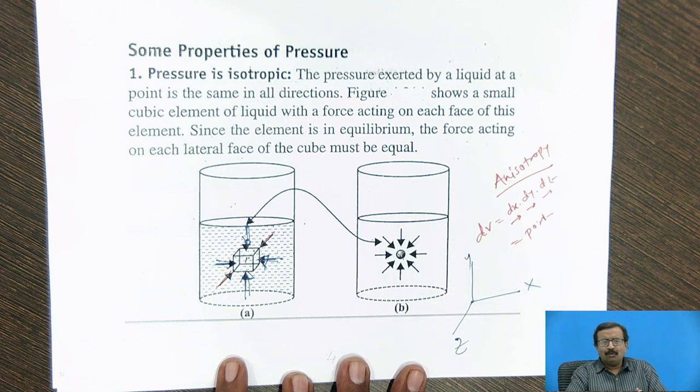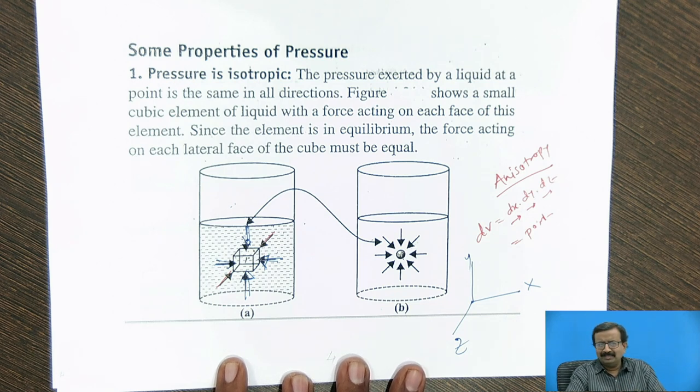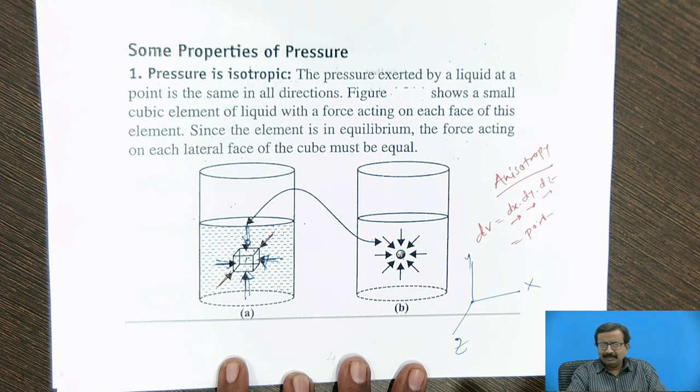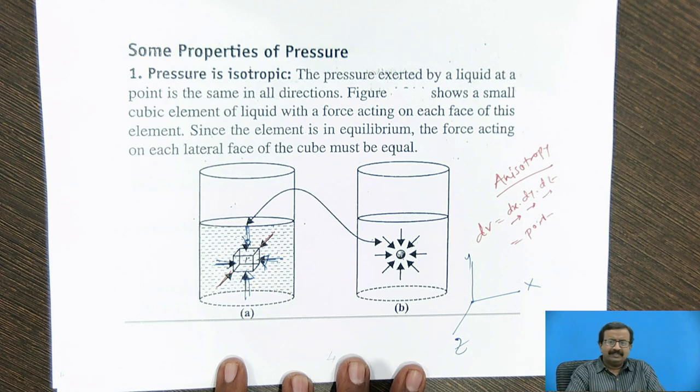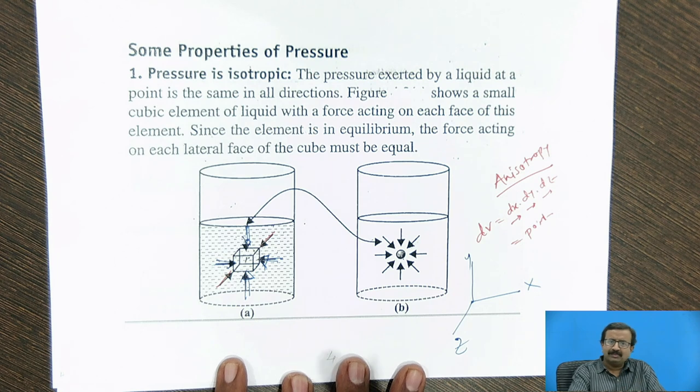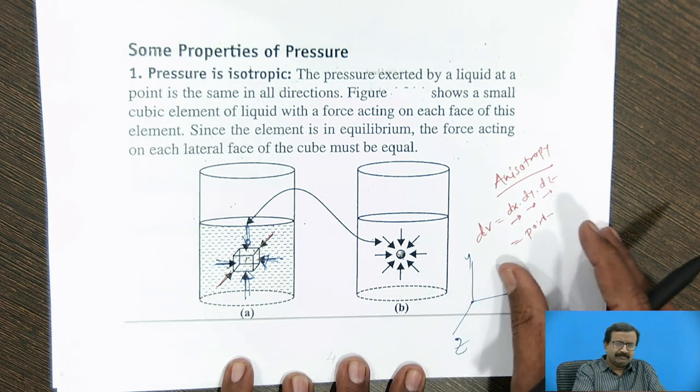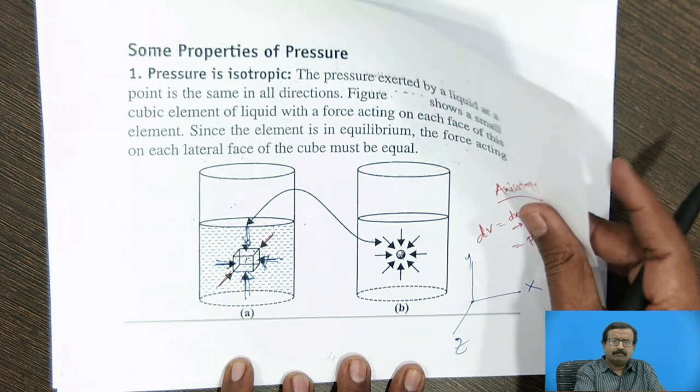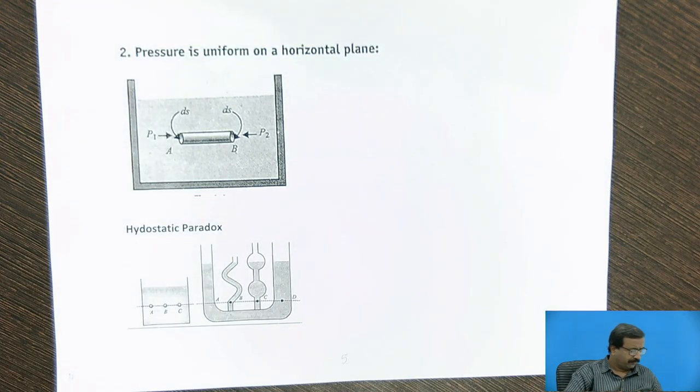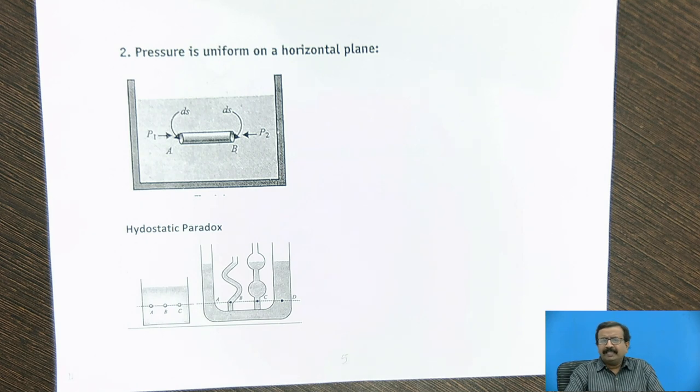And I will show that the pressure is compressive. So the pressure is always compressive. There is no concept of tensile pressure. Tensile stress is there, but pressure is always compressive. And in static pressure, when we show it on the Mohr circle, it will be a point. It will not be a circle because there is no shear. There is no movement of the fluid taking place. So this is the first point. That is, fluid pressure is isotropic.